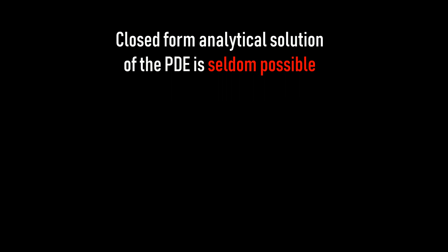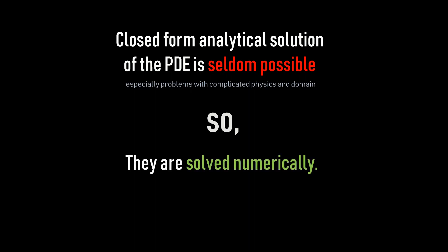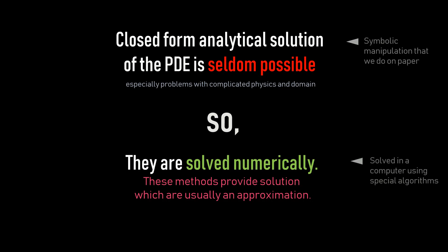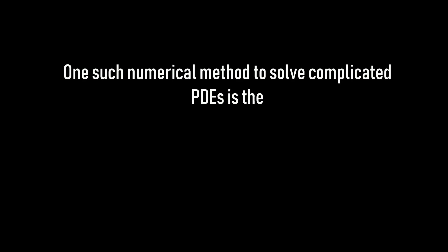But for complicated domains, such kinds of solutions are not always possible. For very complicated 3D parts with different topologies, it is not possible to get analytical closed-form solutions. So what we do is solve the problem numerically. By solving numerically, we mean we try to find out an approximate solution. Analytical solution is symbolic manipulation done on paper, while a numerical solution is an algorithm implemented and solved using a computer.